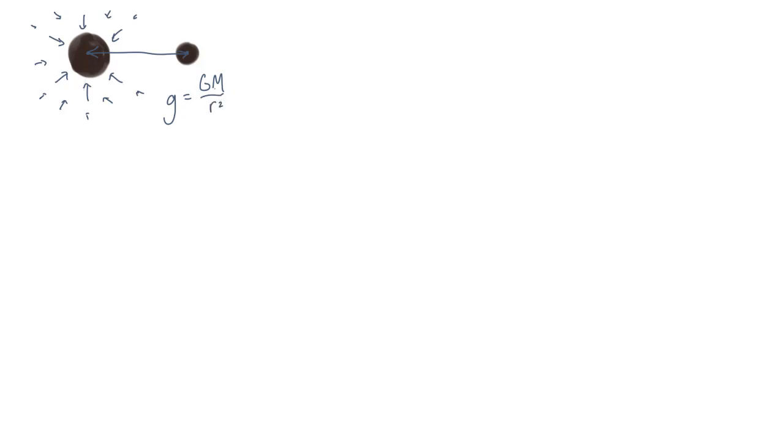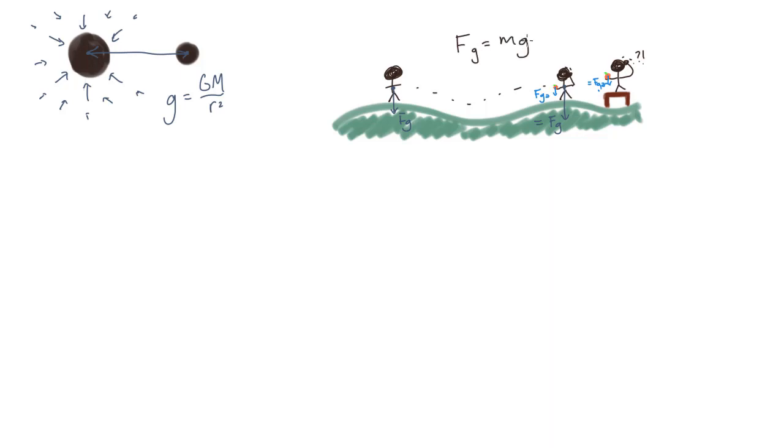The fields point radially inwards towards the mass. However, the gravity we interact with every day doesn't seem to be changing direction as I move around. Gravity keeps pointing downward and it doesn't seem to have any dependence on distance either. An apple seems to weigh just as much on the ground as it does when I step onto a table. In fact, last year you were explicitly taught that the force due to gravity is F equals mg, where g is constant and points downward. So how do we square that with Newton's law of universal gravitation?